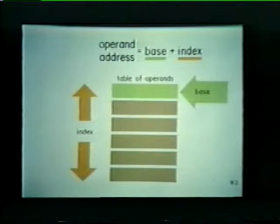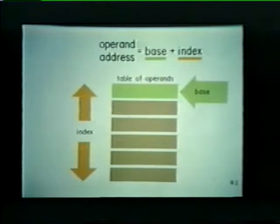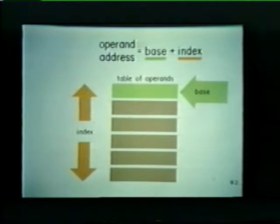In some of the earlier addressing modes, we stored the address of an operand in one of our GPRs. However, now our operand address is calculated from two components. Where do we store these two address components? Well, the base, or starting address of the table, can be stored in one of the general purpose registers. Here, we've stored the base address in register R2.